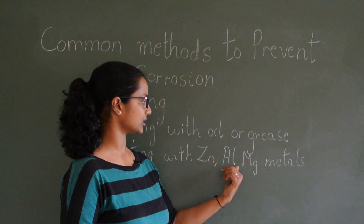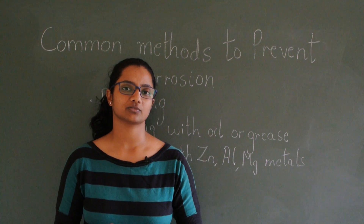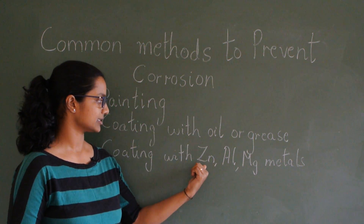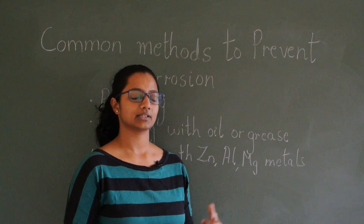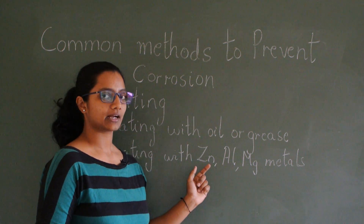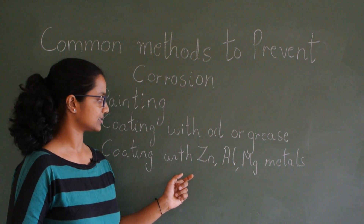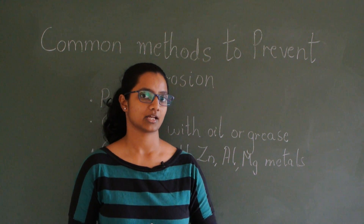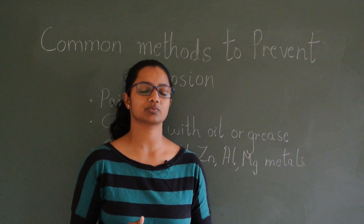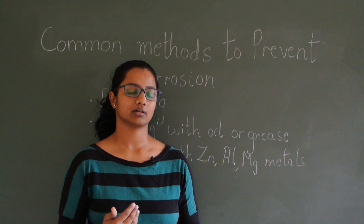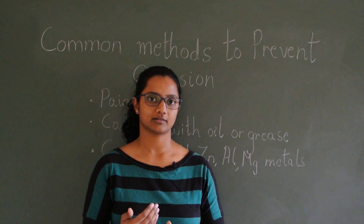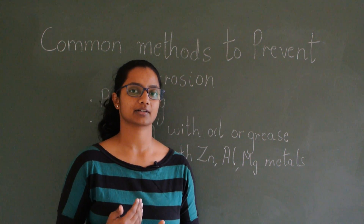Another effective method is coating iron with zinc, aluminium, or magnesium. This can be done in the form of electroplating or anodising. When zinc is coated on iron, that is called galvanised iron. In the reactivity series, zinc is more reactive than iron, so it reacts with oxygen and forms zinc oxide.